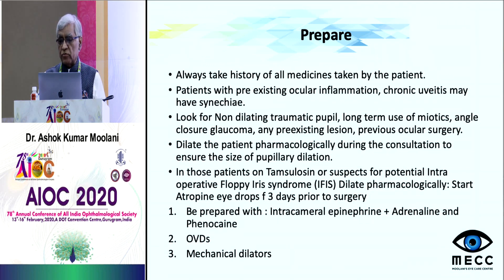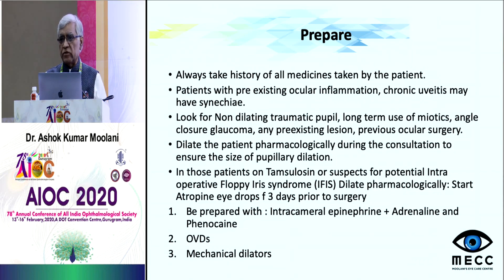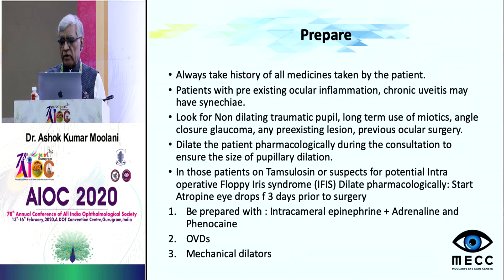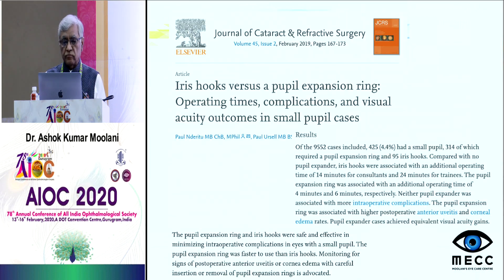One must prepare preoperatively in patients with small pupils. Taking a history of any medication is very important during the first consultation. Observe if the pupil is adequately dilated. If a patient has IFIS, one can use atropine three times a day for three days pre-op. One can also use intraoperative phenylephrine or pharmacologic products to dilate the pupil, or use OVDs for viscomydriasis.